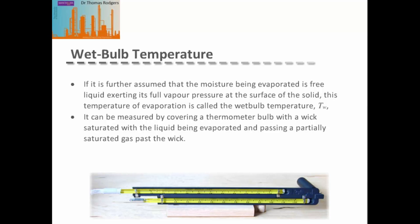The wet bulb temperature can be measured by covering a thermometer bulb in a wick saturated with the liquid being evaporated. In the typical setup, the dry bulb thermometer measures the gas temperature, while the wet bulb thermometer — identical but with a moisture-saturated wick on the bulb — gives the wet bulb temperature.